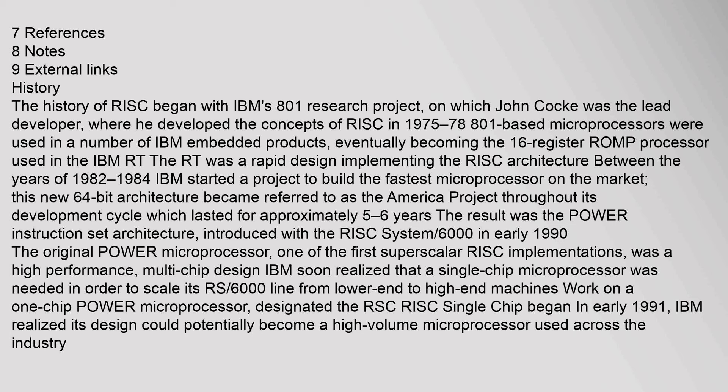IBM started a project to build the fastest microprocessor on the market. This new 64-bit architecture became referred to as the America project throughout its development cycle, which lasted approximately 5 to 6 years. The result was the Power instruction set architecture, introduced with the RISC System 6000 in early 1990. The original Power microprocessor, one of the first superscalar RISC implementations, was a high-performance multi-chip design. IBM soon realized that a single-chip microprocessor was needed to scale its RS/6000 line. Work on a one-chip Power microprocessor began in early 1991, and IBM realized its design could potentially become a high-volume microprocessor used across the industry.